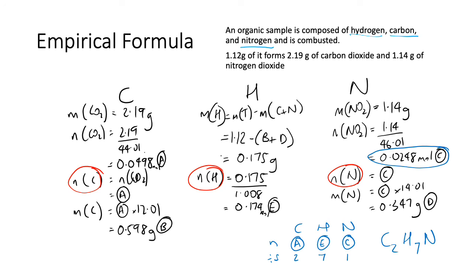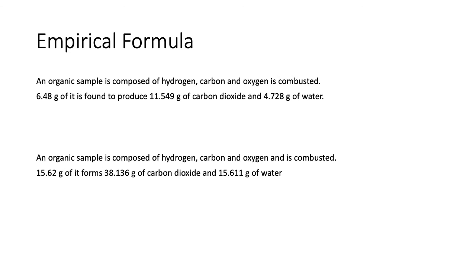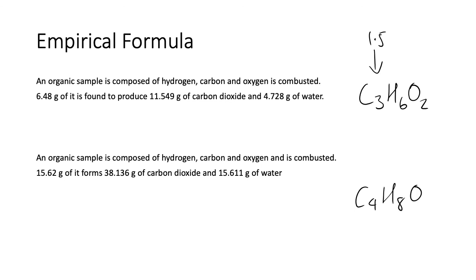Have a look at these two practice questions. The answers are: the first one is C₃H₆O₂ — you'll get a ratio of 1.5 somewhere which means you multiply everything by 2 to get the simplest whole number ratio. The second one is C₄H₈O. If you get them wrong, ask about it later. That's it — off you go, see you later!